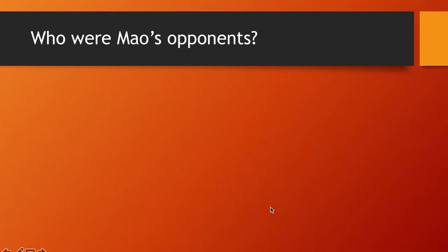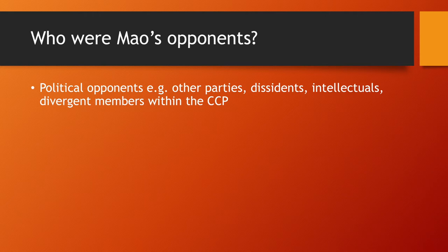First, we need to know who were the Communist Party's opponents. We have political opponents such as other parties, dissidents, intellectuals, and any members within the party itself who were not loyal enough, or who tried to stray away from Maoist thought, or did not agree with Mao's policies.